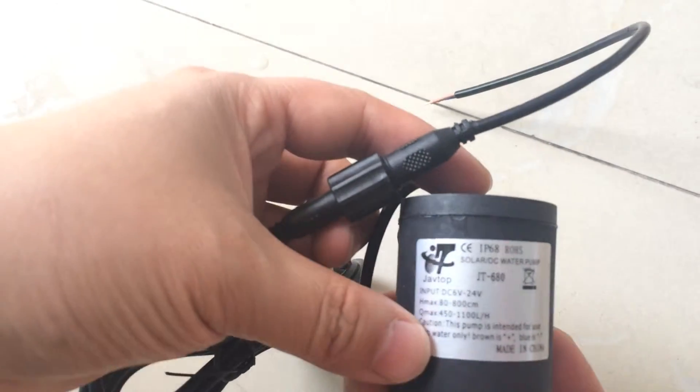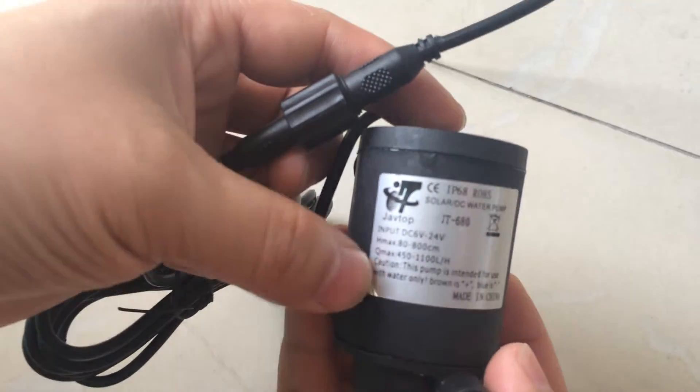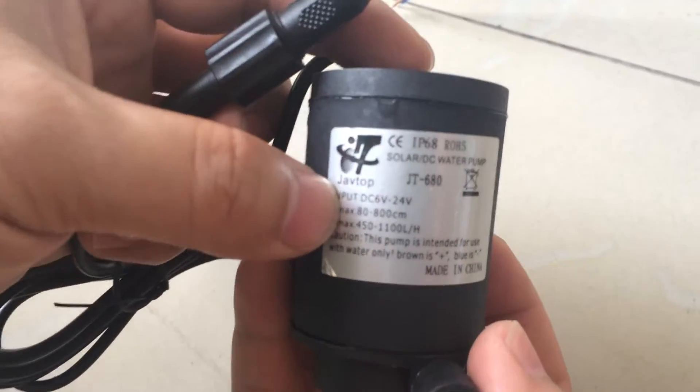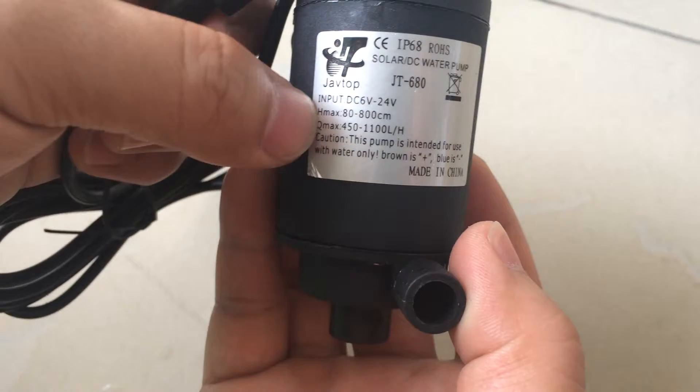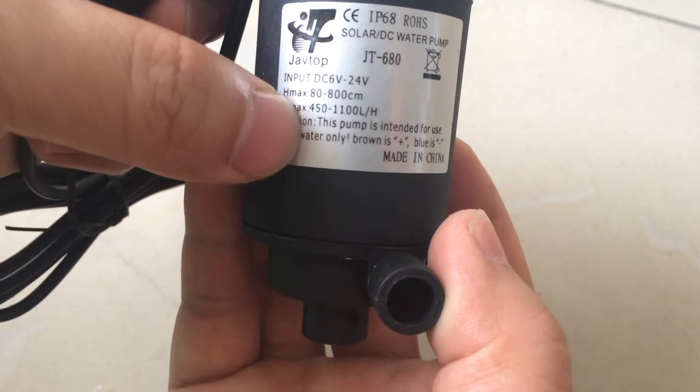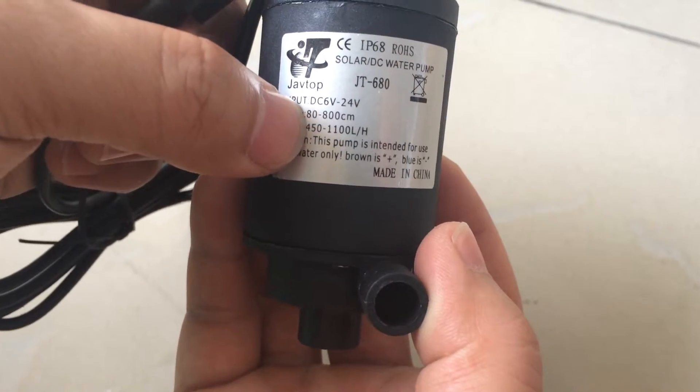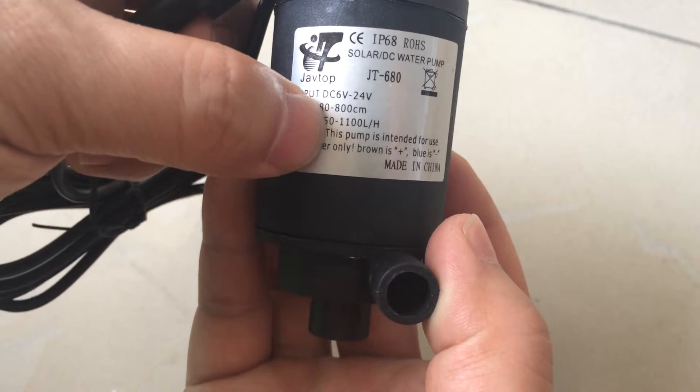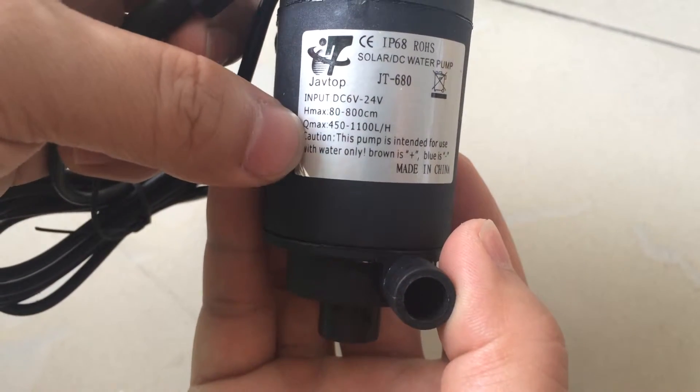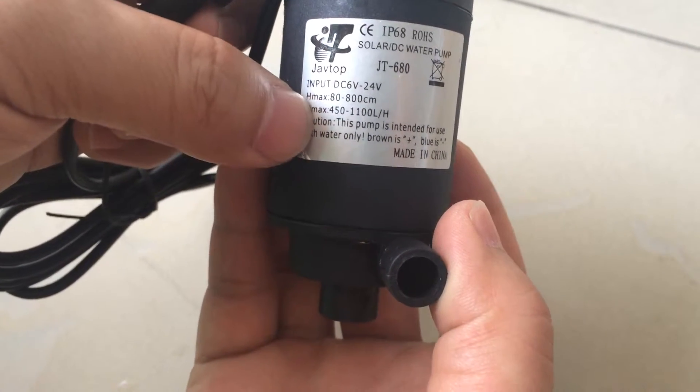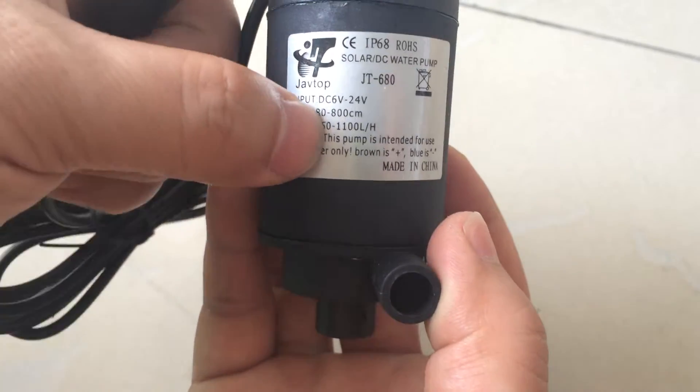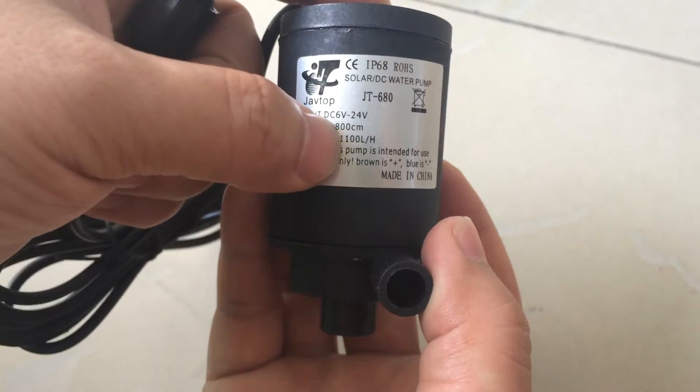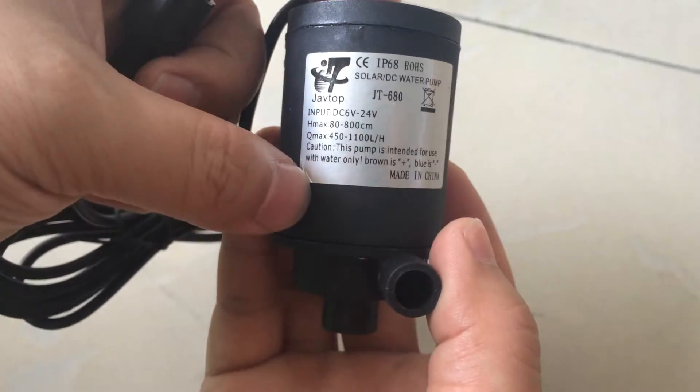We can see the label on the pump. The input voltage range can be from 6 to 24 volts. The max steady lift is about 80 centimeters to 800 centimeters. About the flow rate, it can be ranging from 450 to 1100 liters per hour.